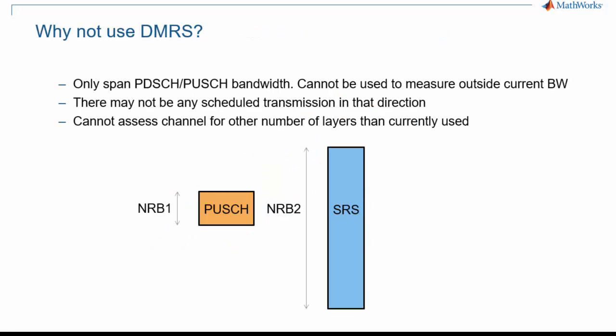As a final remark, one may wonder whether one could use DMRS for channel sounding, as opposed to CSI-RS and SRS. There are many reasons why this is not possible. DMRS do not extend beyond the current data transmission allocation, and they are not available when there is no data transmission. Also, DMRS are in support of the current transmission configuration; they don't enable looking at other options for later scheduling, such as using more antenna ports than in the current transmission. This concludes this episode of the 5G Explained series on signals for channel sounding.